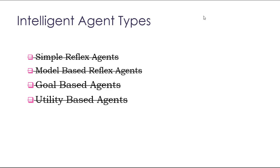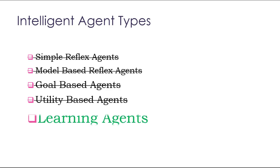If it is acting to achieve a certain goal, it is a goal based agent. And if it has checking the utility of the agent while achieving the goal, then it is a utility based agent. Now we are about to discuss the learning agent.